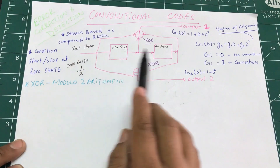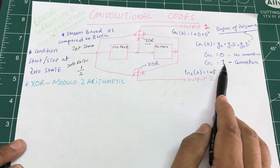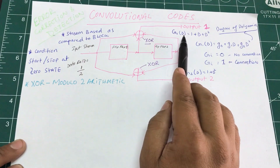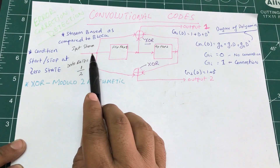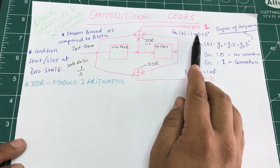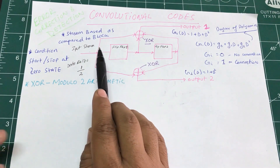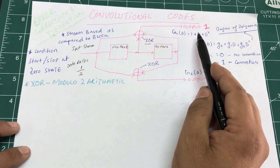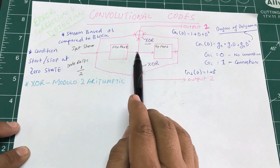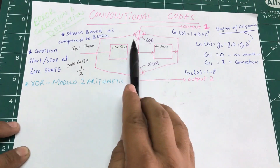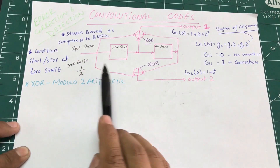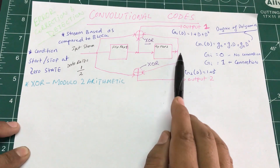If g_i equals zero, there is no connection to that flip-flop — it's just the input stream. Any value other than zero describes which flip-flop is connected to the output. Output one has an equation consisting of three terms added using modulo-two arithmetic: the input stream XOR the output of flip-flop one XOR the output of flip-flop two. Output two consists of the input stream XOR the output of flip-flop two.